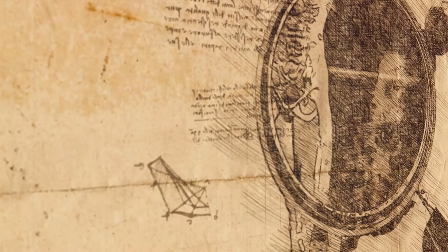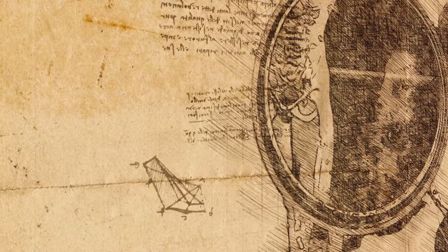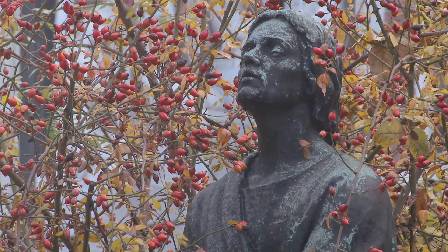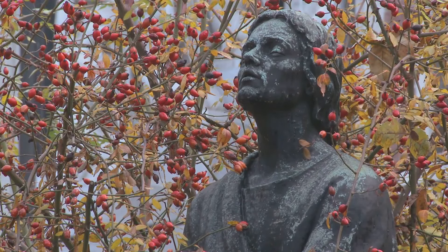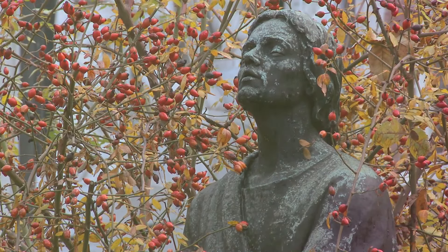For example, the diversity of finch species on the Galapagos Islands, which played a key role in Darwin's development of his theory, can be attributed to the different food sources available on each island, leading to the evolution of different beak shapes and sizes.